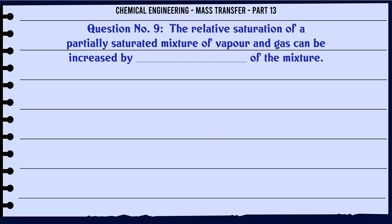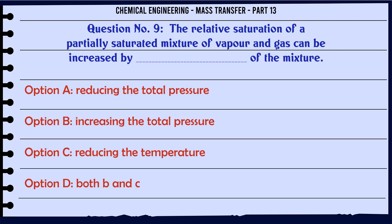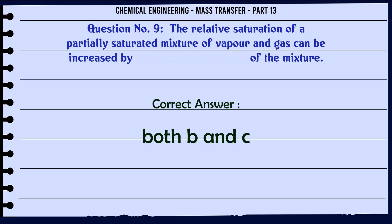The relative saturation of a partially saturated mixture of vapor and gas can be increased by: A. Reducing the total pressure. B. Increasing the total pressure. C. Reducing the temperature. D. Both B and C. The correct answer is: Both B and C.